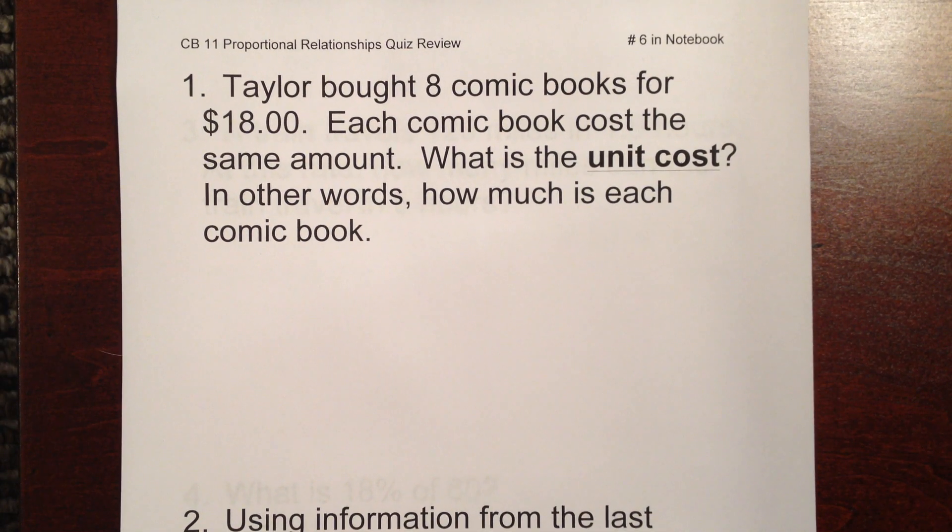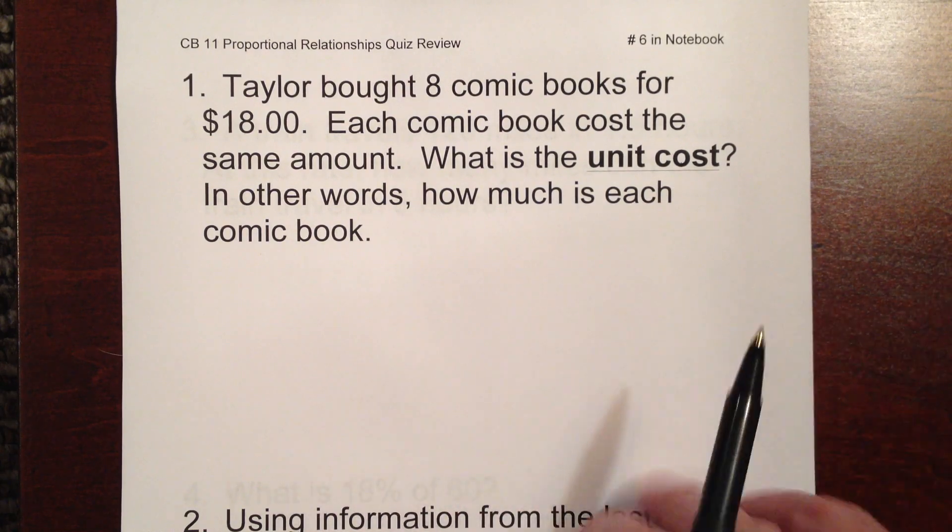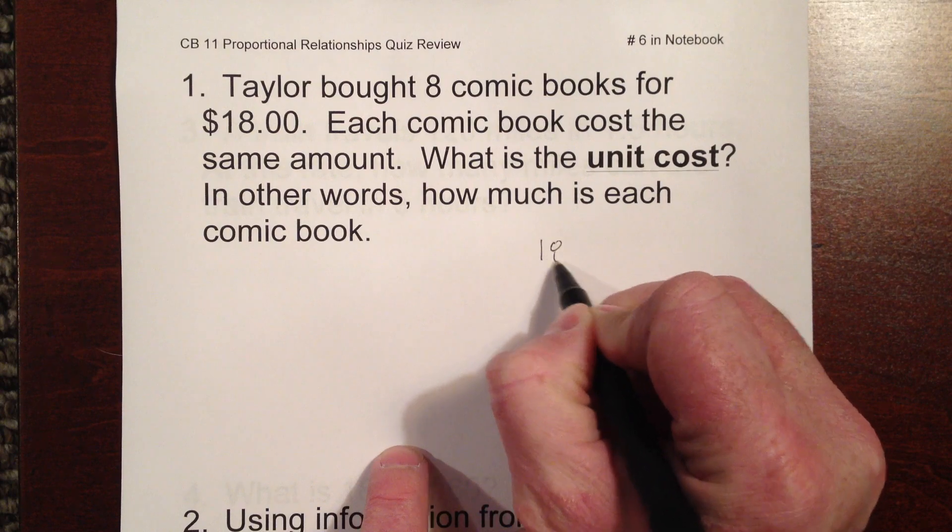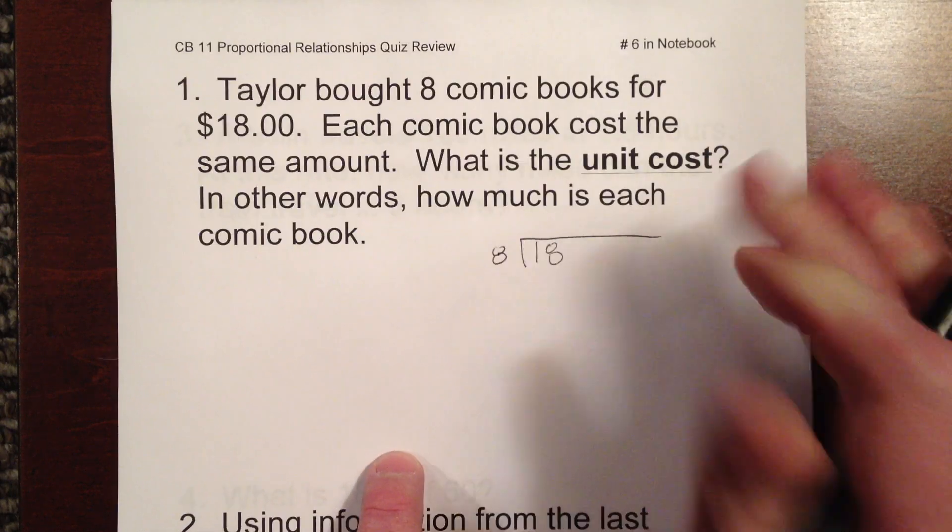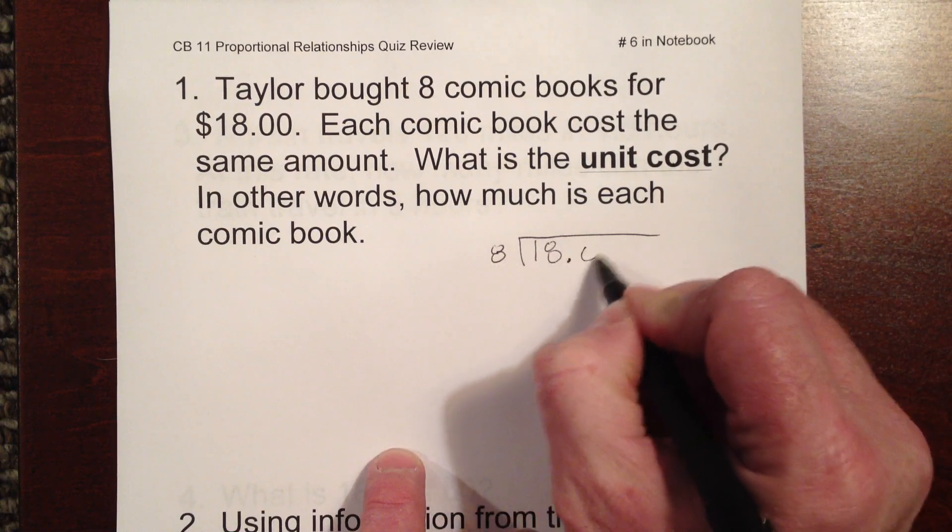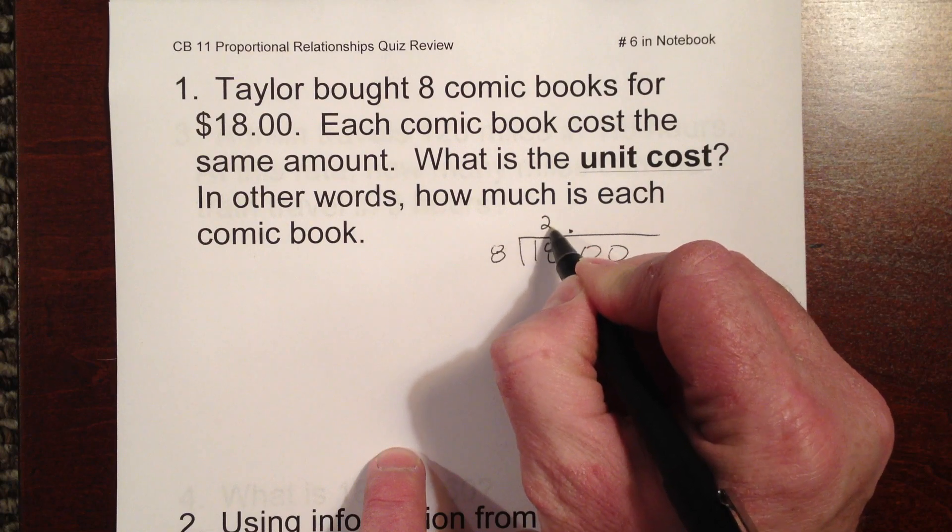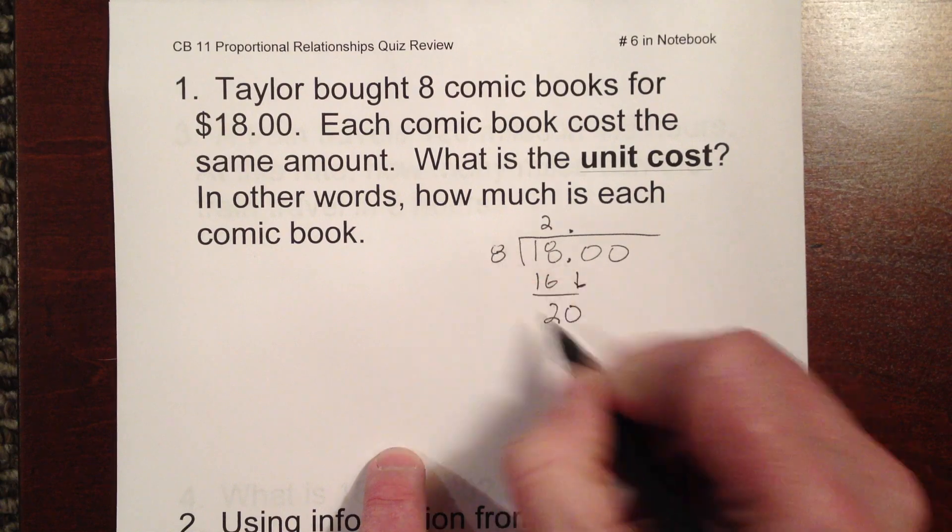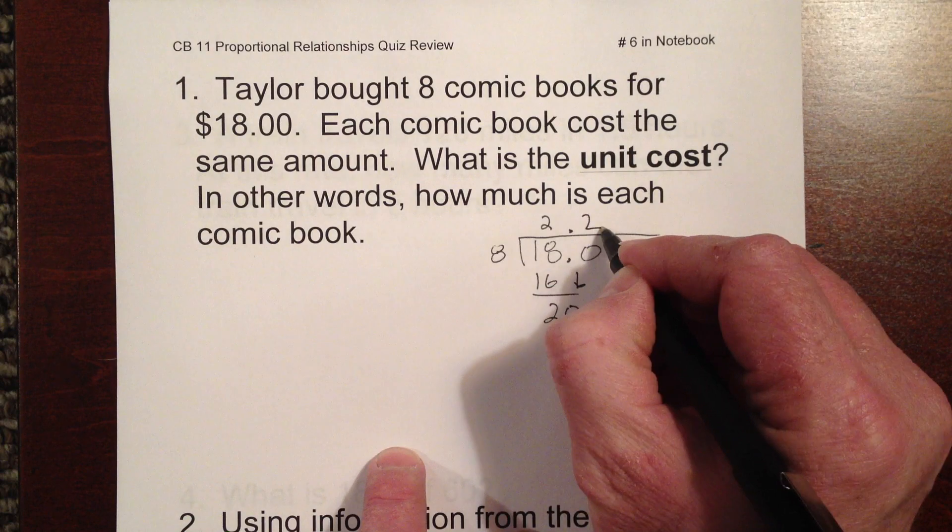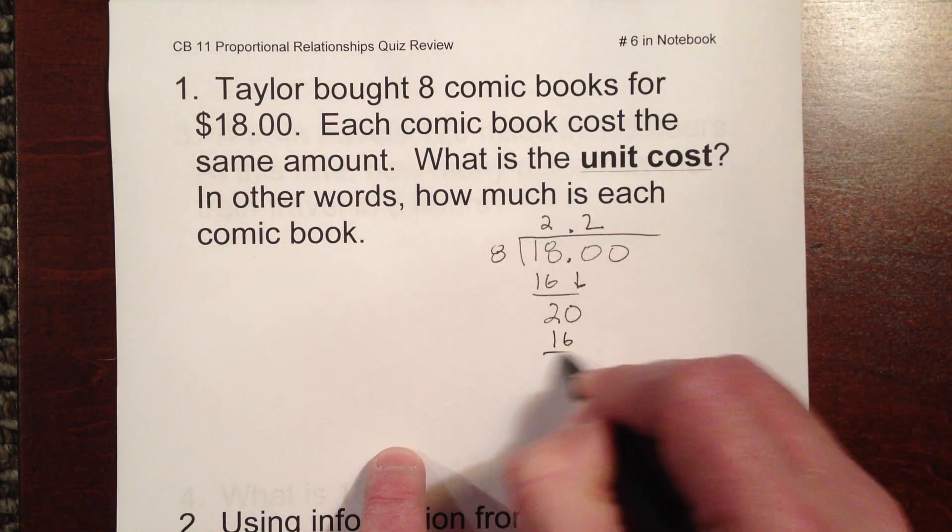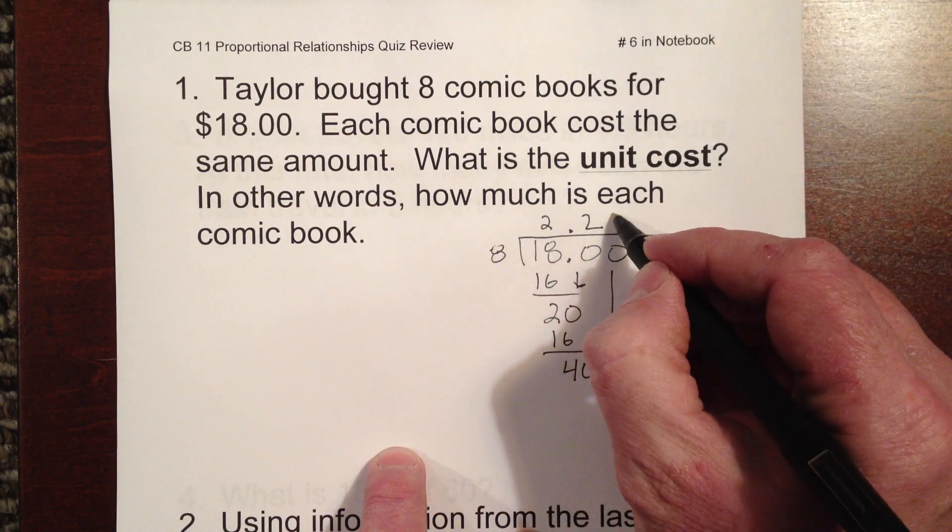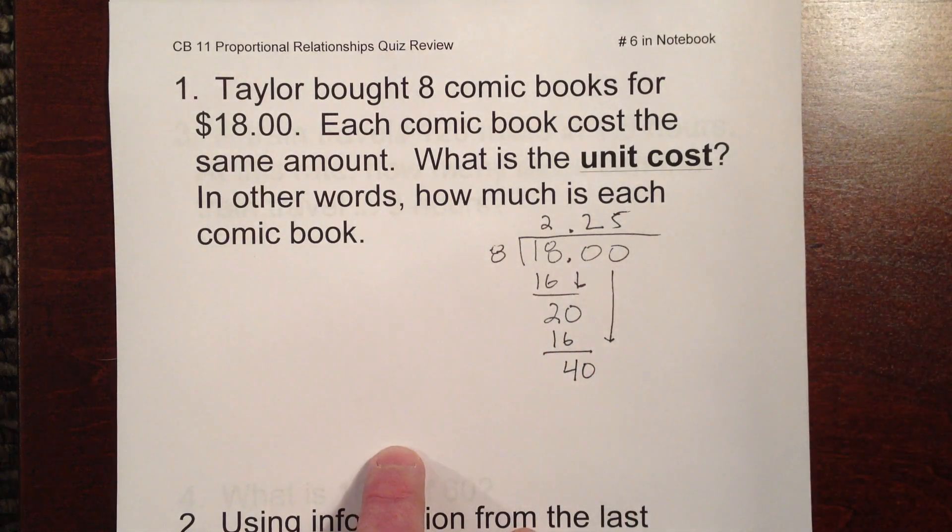And that's what this question is asking us here. Taylor bought eight comic books for $18. Each comic book costs the same amount. What is the unit cost or unit price? In other words, how much is each comic book? What we would simply do is take 18 and divide it by 8. And 8, of course, let's go ahead and put us a few zeros in our decimals here. This is going to go in here twice without going over. This will give us 16 with a remainder of 2. And I'm going to bring down my zero here. This will go in here, again, about twice without going over. And we're going to multiply that and get 16 again. And here we're going to have four left over and bring our zero down. And this is going to go in here finally evenly at five. So we've got 2.25.